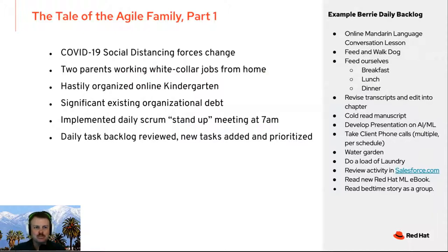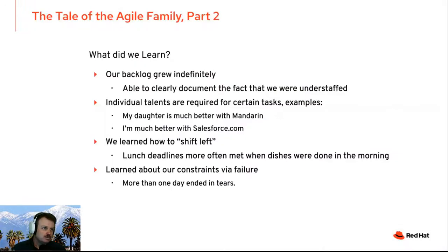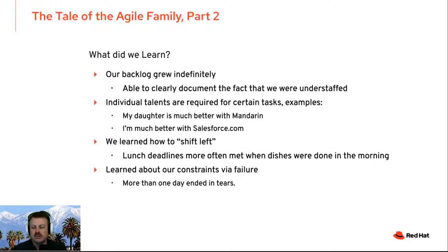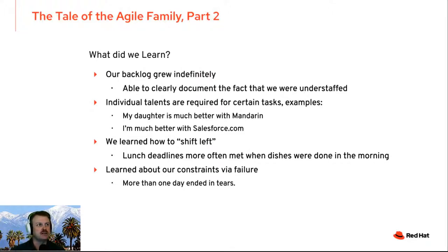So as an example task list, we have our daily 7 a.m. standup, review the backlog, add new tasks and prioritize. What do we learn from this? We learned that individual talents are better for certain tasks — individual specialties still matter. My daughter is much better with Mandarin; I'm much better with Salesforce.com. We learned about our constraints via failure and moving forward. The reason I give this example is to think of Agile in a very broad sense — as a way to take in incoming tasks, be able to provide feedback, and set expectations about what we're going to be able to accomplish in a given set of time.